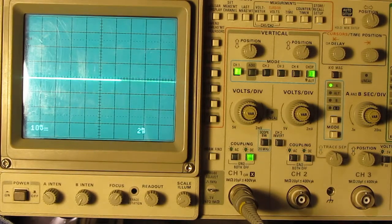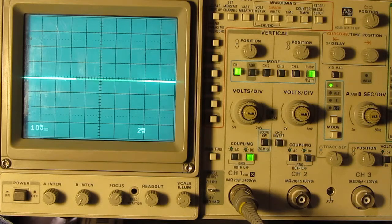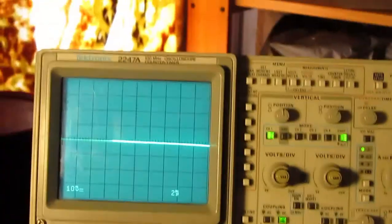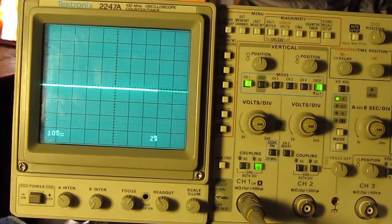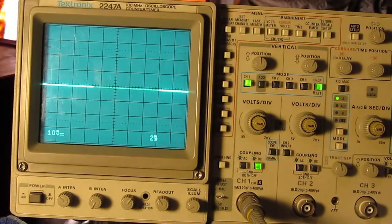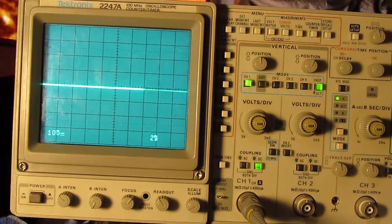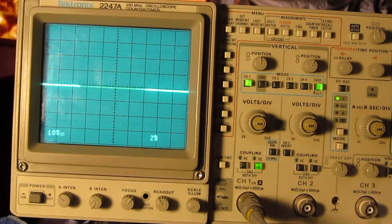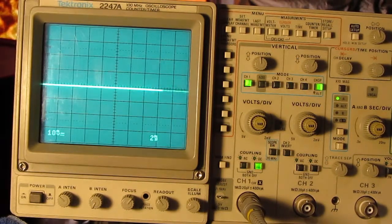Okay, we're continuing on here, get the glare off the screen there. This is a Tektronix 2247A 100 megahertz oscilloscope with a counter and a timer embedded in it, which I'm not going to use right at the moment because I don't know enough about it.